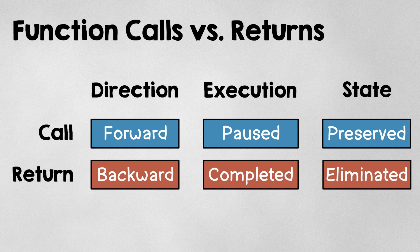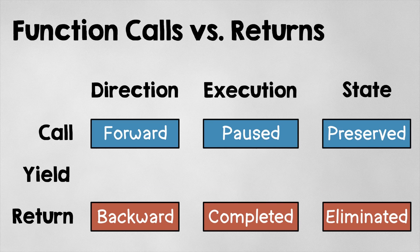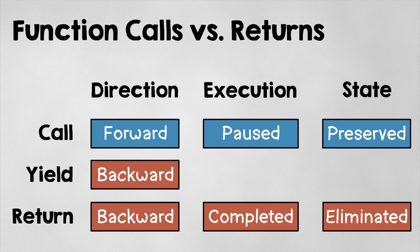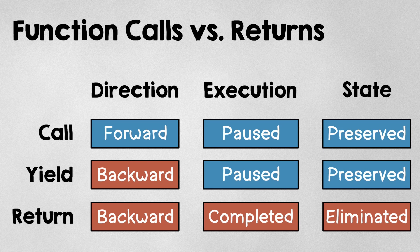What if a function return could have similar properties to a function call? What if a function could yield its execution back to its caller like a return would, but also pause its execution and preserve its state as if it were making a function call? And this is the essence of a coroutine — the ability to pause its execution and preserve its state, not just when calling another function, but at any point.